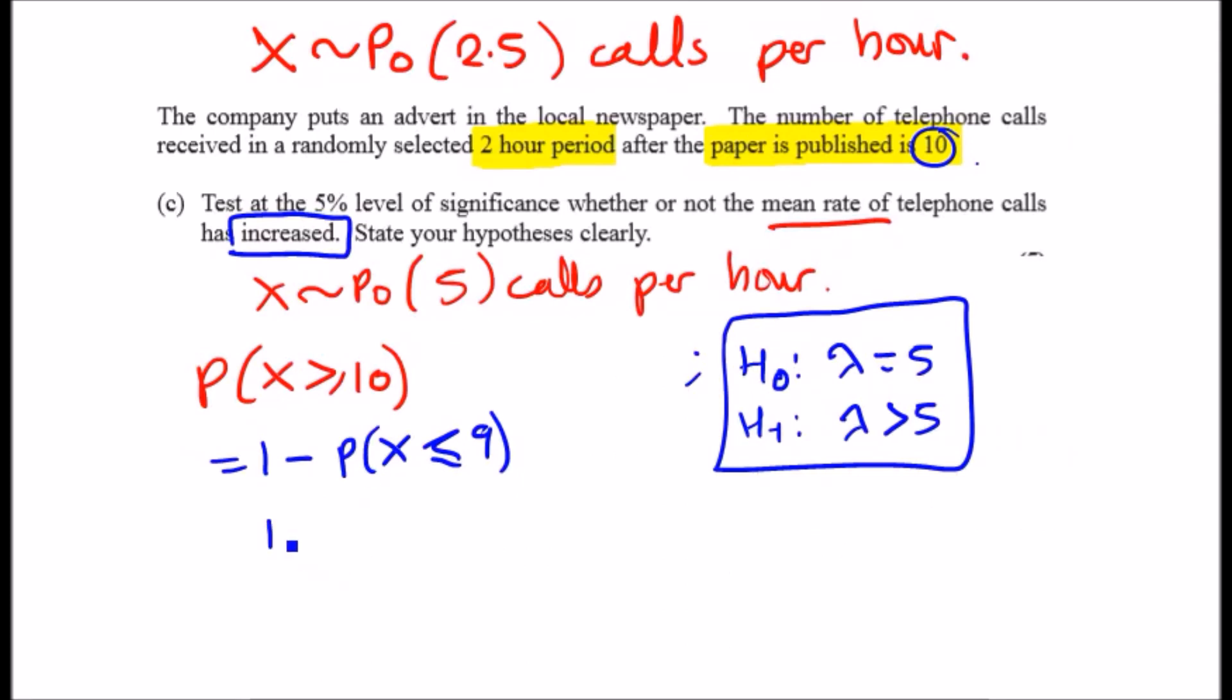So it'd be 1 minus 0.9682, so this already to me, this already looks less than five percent, so I mean I already know what the statement is. So let's have a look, so we got 0.0318, and this is clearly less than five percent.